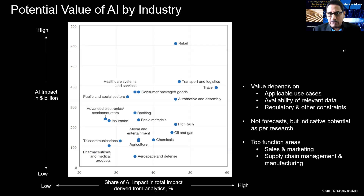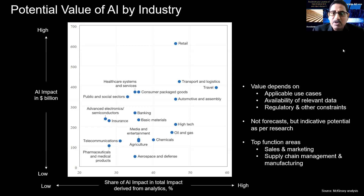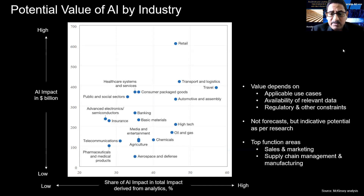If you look at the potential value of AI by industry, retail, banking, and financial services incidents have adopted AI over the past few years a lot. When we see what is the potential value — these are not forecasts but indicative potential as per the research, and may change, of course — this is research from McKinsey. As we could see, retail and some others are looking way ahead compared to others in terms of the share of AI impact.